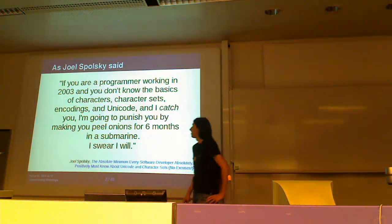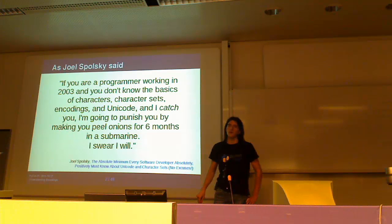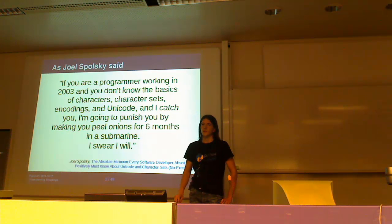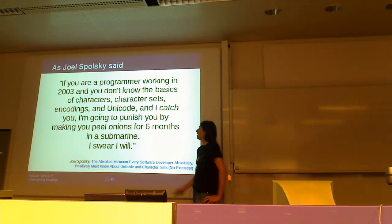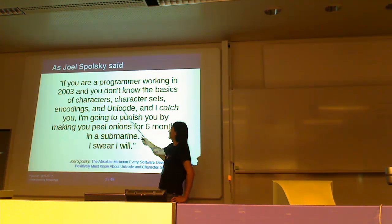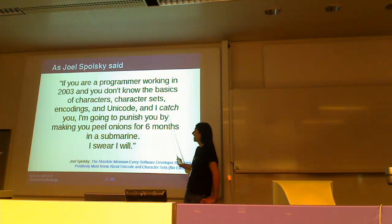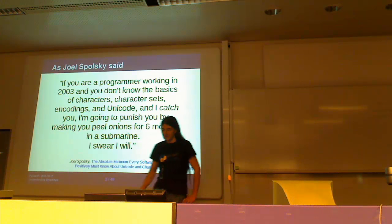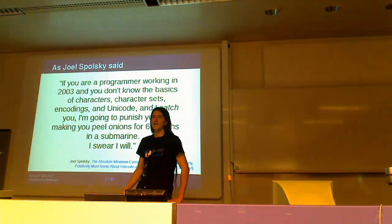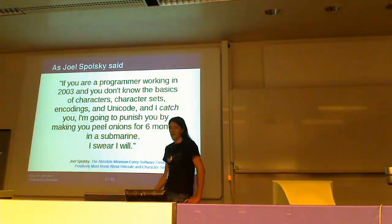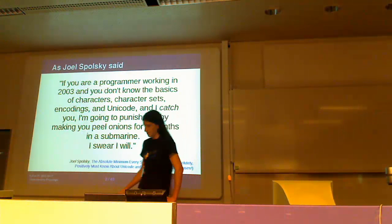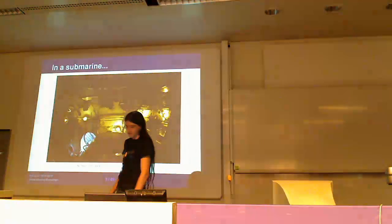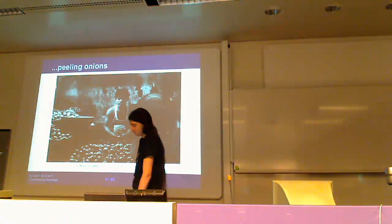We can start with this quote by Joel Sporsky. Do you know who Joel Sporsky is? He's the guy behind Stack Overflow, and he was also one of the main developers of Microsoft Excel. In 2003 he said: 'If you are a programmer working in 2003 and you don't know the basics of character sets, encodings, and Unicode, and I catch you, I'm going to punish you by making you peel onions for six months in a submarine.' Now it's 2011 — eight years later — and you really don't have any excuse not to know all these things. So if you don't want to end up in a submarine peeling onions, you should listen to what I'm going to say.